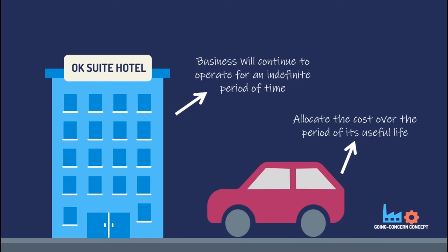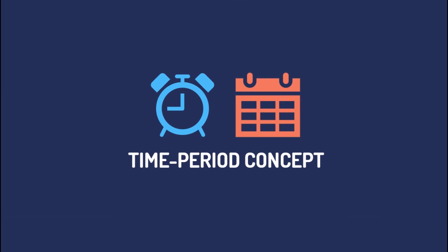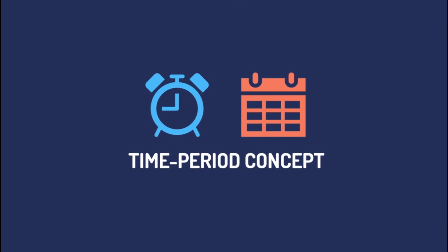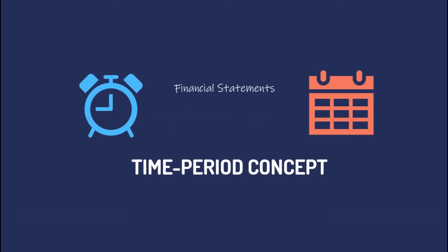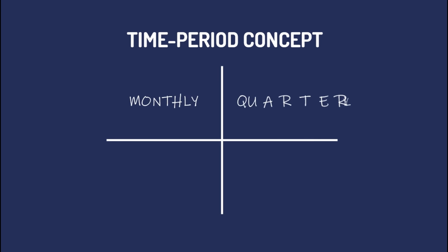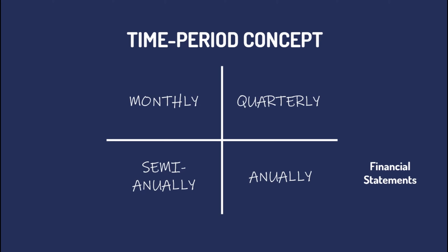The third accounting assumption is time period. This simply means that the life of the business is divided into equal reporting periods, wherein at the end of each period, financial statements are prepared. These time periods can either be monthly, quarterly, semi-annually, or annually. But we should always remember that financial statements should be prepared at least annually, meaning at least once a year. In the time period concept, we also need to understand the difference between calendar year and fiscal year.